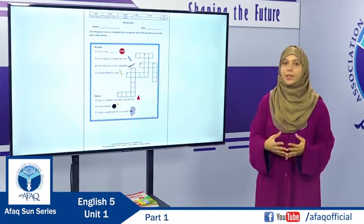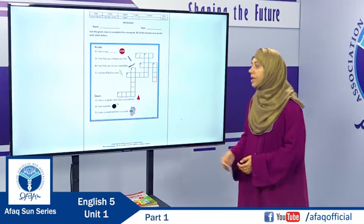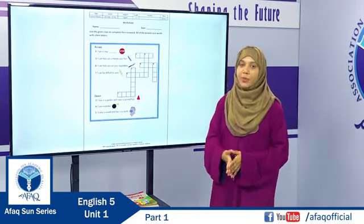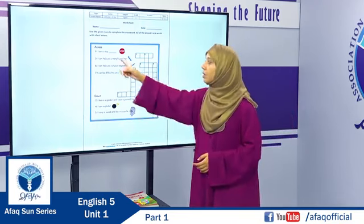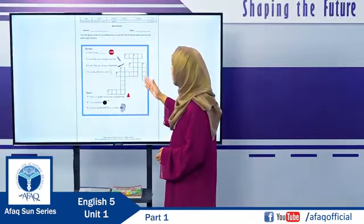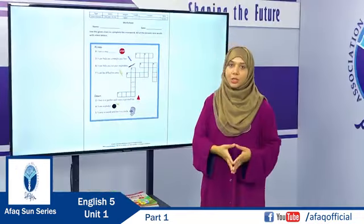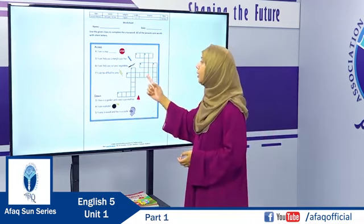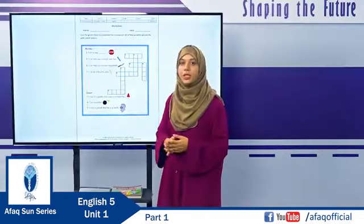Dear teachers, in this DLP we have also provided a worksheet for the practice of silent letters. In this worksheet, a crossword has been provided with clues on one side and crossword squares on the other. Students will read the clues and write the correct word according to the number. Let's do the first one together. Dear students, the first clue is: I am a stop.